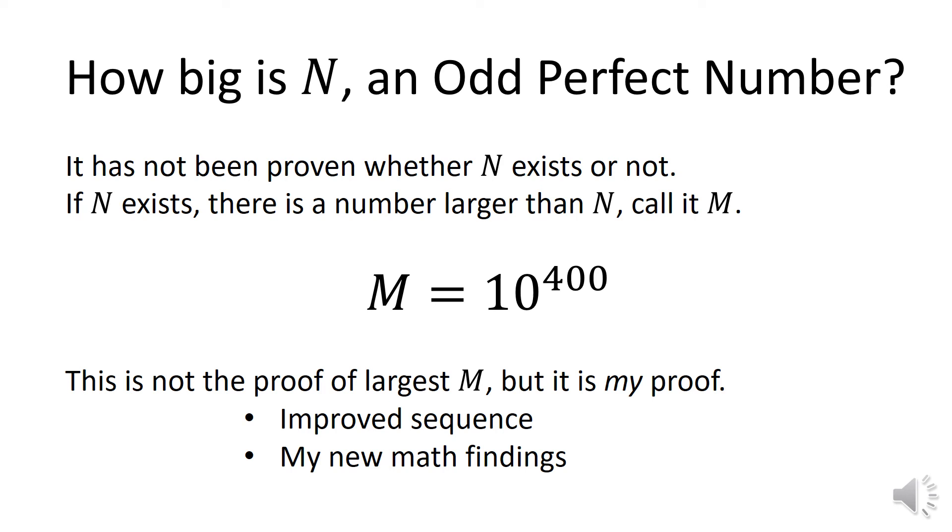An important characteristic of an odd perfect number is its size. Pick a bound M and find an odd perfect number less than M. If not found and if one exists, an odd perfect number must be larger than M. For my proof carried out by me and a desktop computer, the bound is M equals 10 to the 400.